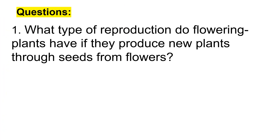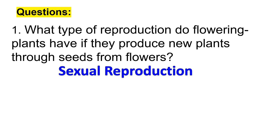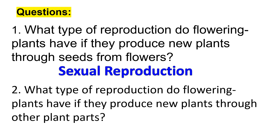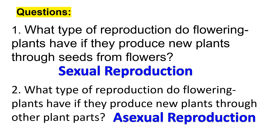What type of reproduction do flowering plants have if they produce new plants through seeds from flowers? That is called sexual reproduction. What type of reproduction do flowering plants have if they produce new plants through other plant parts? That is asexual reproduction.